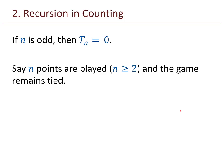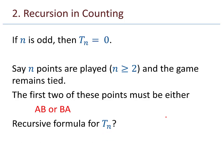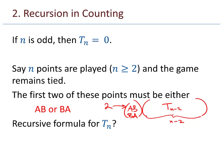Let's say n points are played and the game remains tied. The first two points must be either AB or BA, because after the first two points it must also have been tied. So there are 2 choices for the first two points, and then t_{n-2} ways for the remaining n-2 points. Our recursive formula is t_n = 2 times t_{n-2}, with base conditions t_1 = 0 and t_2 = 2.